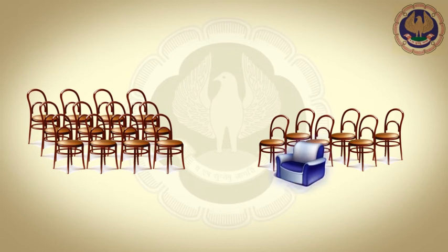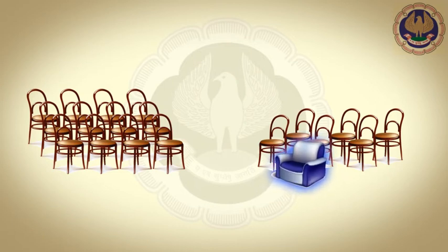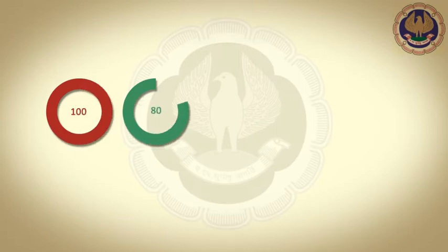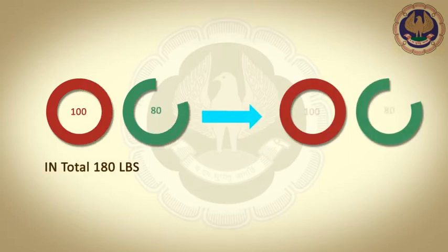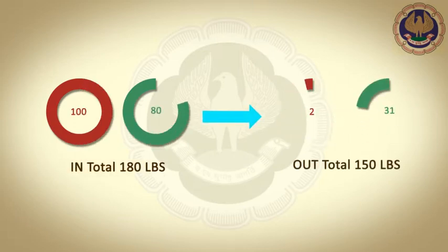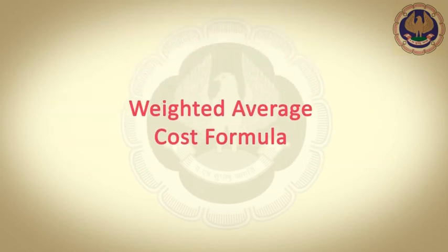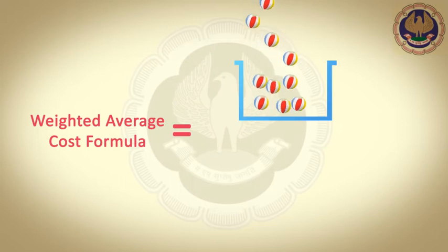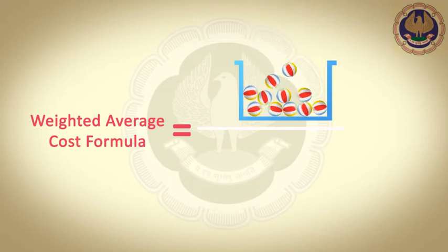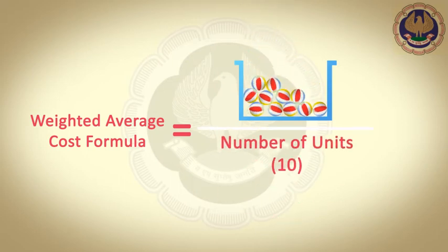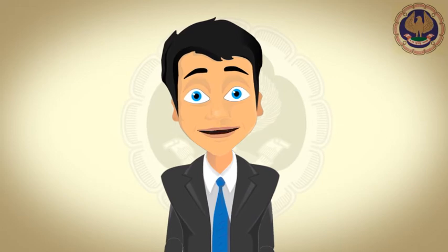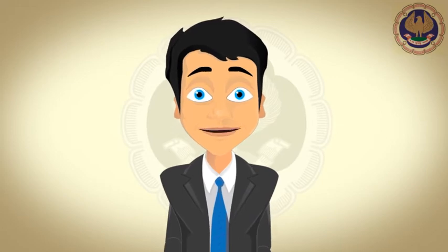If an inventory item is unique to a particular project, then it needs to be identified individually and the cost needs to be assigned. For the cost of other inventories, First In First Out or Weighted Average Cost formula can be applied. Care must be taken to ensure that the entity shall use the same cost formula for all inventories having a similar nature and use.